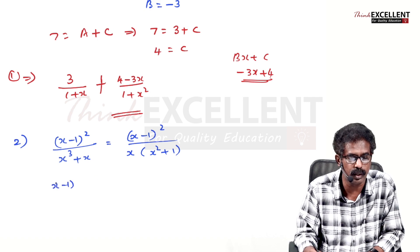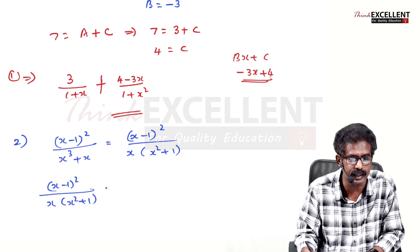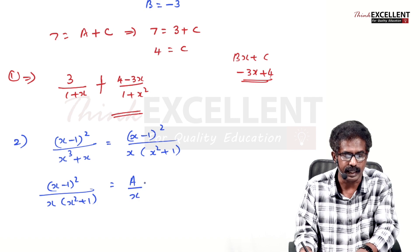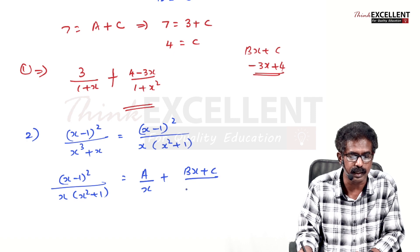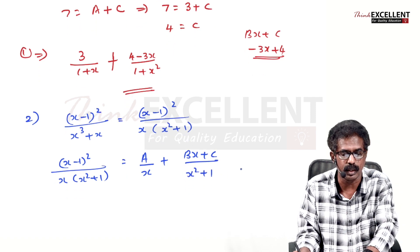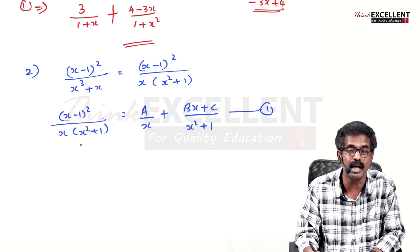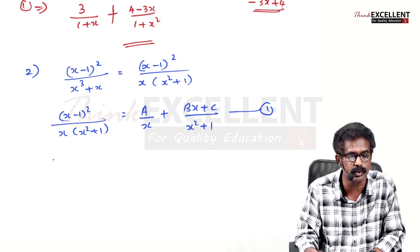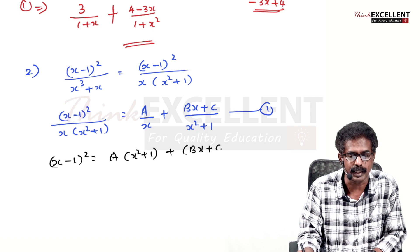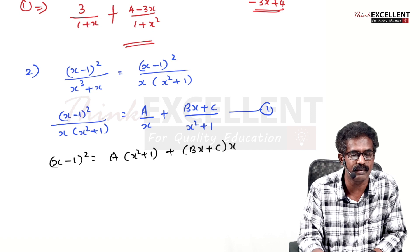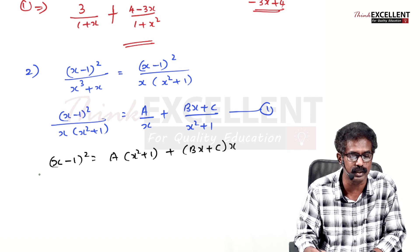Write (x-1)² / [x(x²+1)] = A/x + (Bx+C)/(x²+1). Take LCM and cancel the denominator to get: (x-1)² = A(x²+1) + (Bx+C)(x).